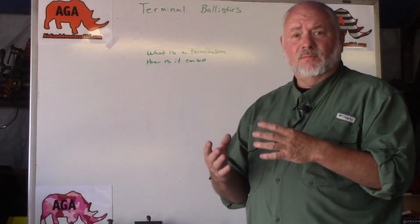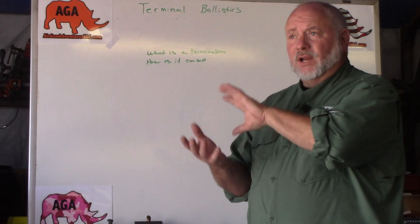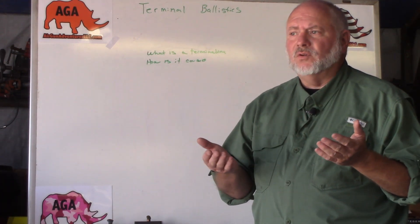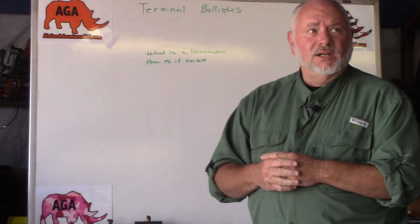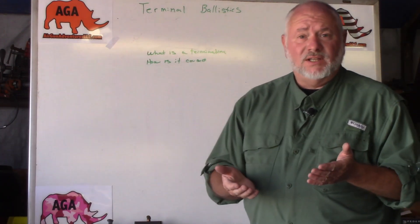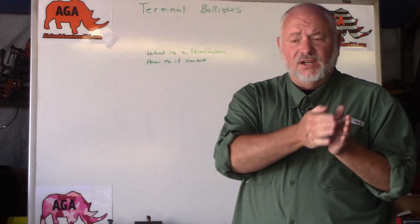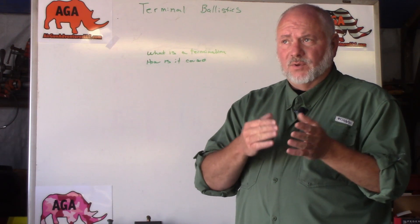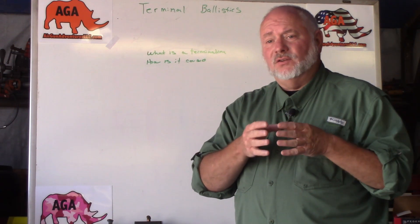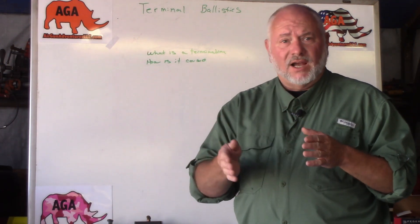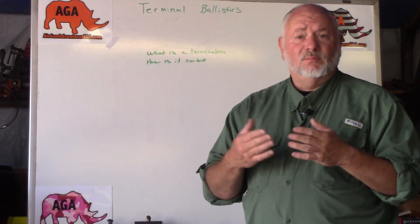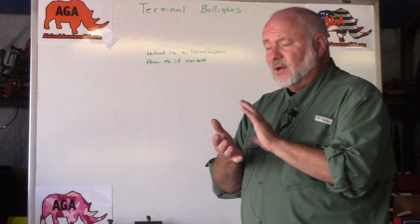We need to talk first about a target medium — aka animals — how an animal is put together, how it works, and what actually constitutes a terminal event. The normal vernacular would be death: at what point you harvest an animal and it dies. We want this to be safe and humane. Death occurs naturally in a chain of events by disease or what have you, but in our case we're working specifically with damage inflicted.